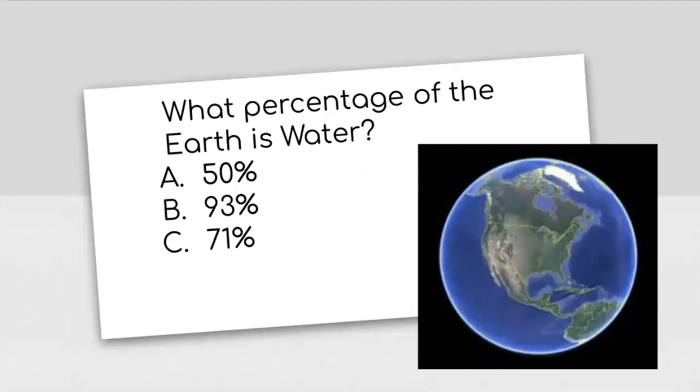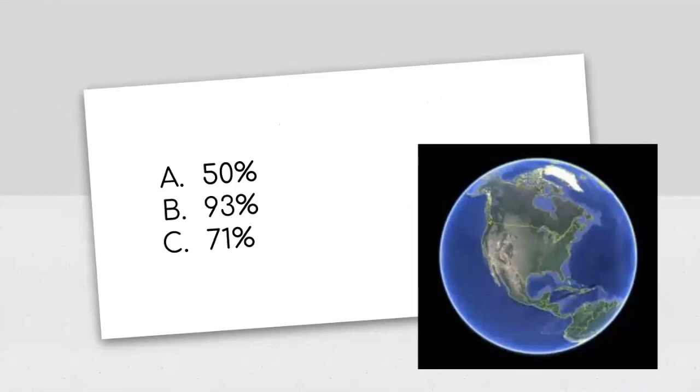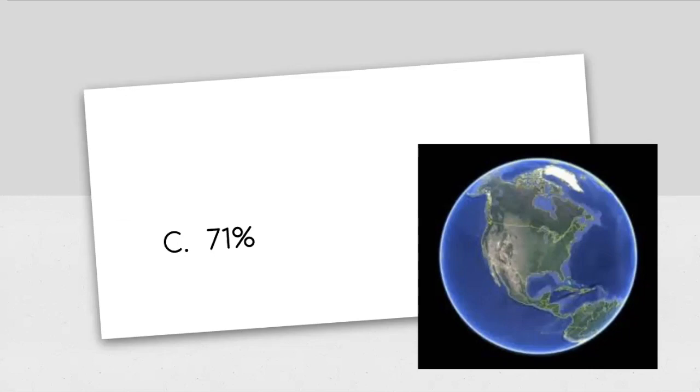And I believe this is the last question. What percentage of the earth is water? This is a second grade question. What percentage of the earth is water? 50%, 93%, or 71%? Not 50%, not 93%. The earth is 71% water. And if you guessed the number near 71, that counts, right? Like 70 or 72. The earth is 71% water and 29% land.